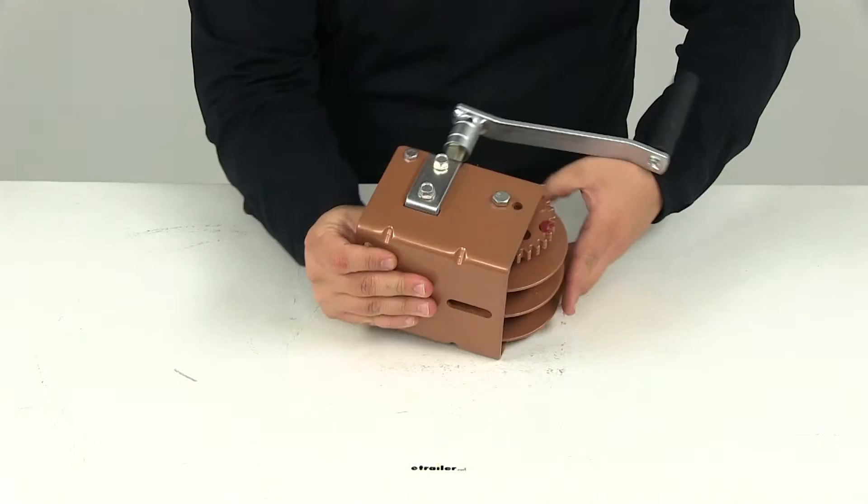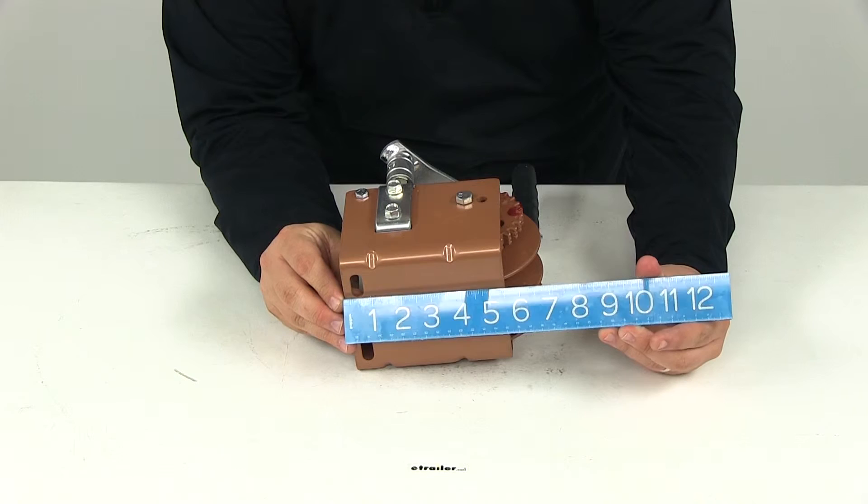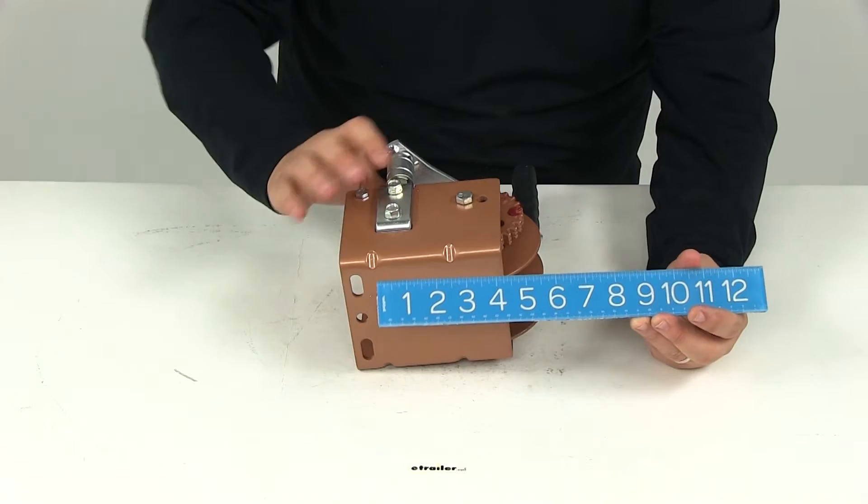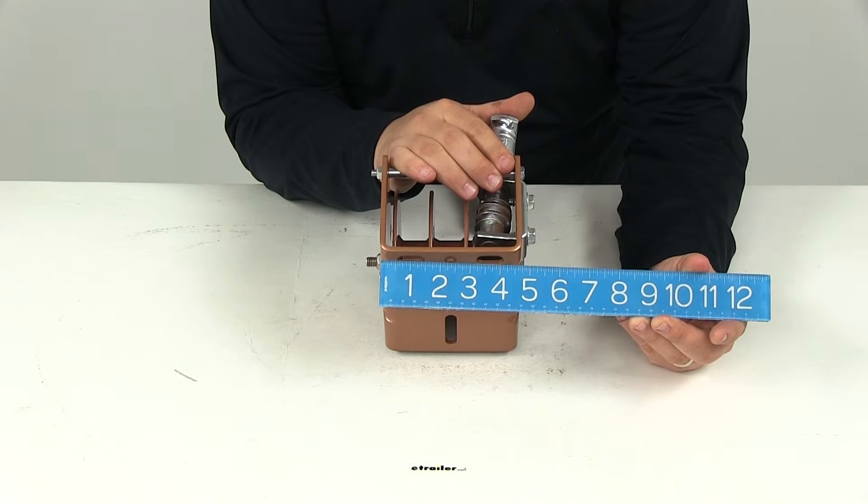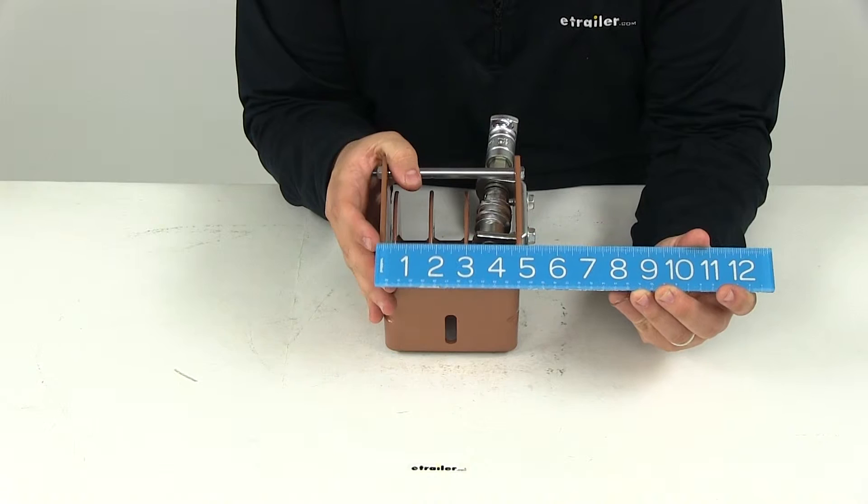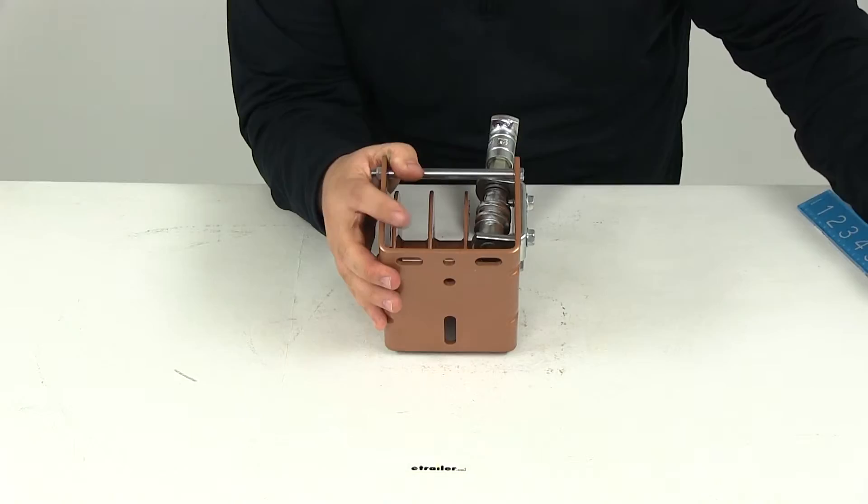Again this has a capacity of 1,500 pounds. We're going to flip it over and take a measurement of the base. This base is going to give us a measurement of five and a half inches long by four and three-quarter inches wide.